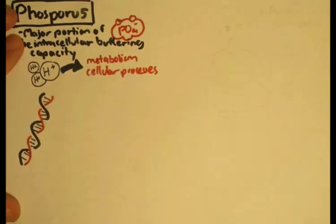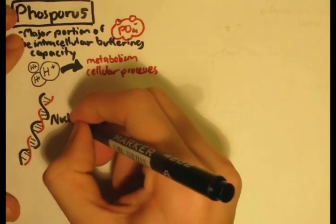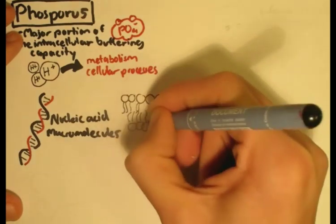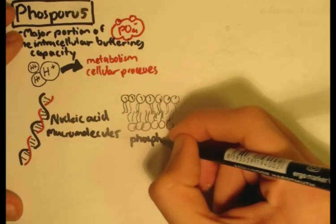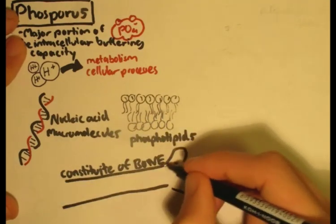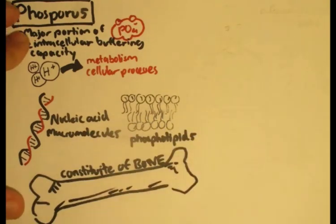Phosphorus is part of nucleic acids such as the ones found in DNA and also macromolecules. It is also a component of the cell membrane, the phospholipids. Now phosphorus is also an important constituent of bone as we will soon find out.